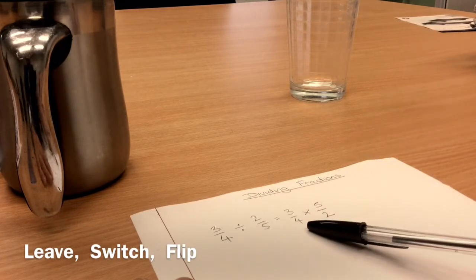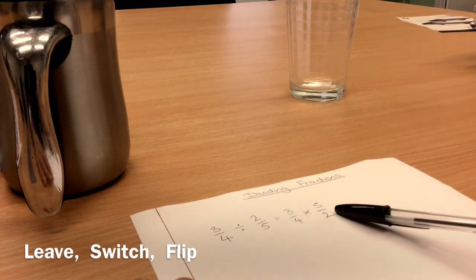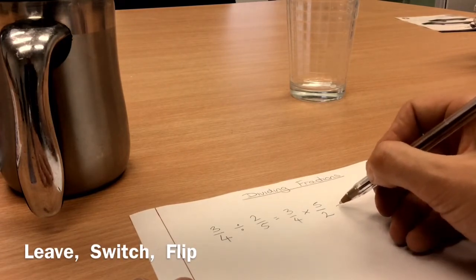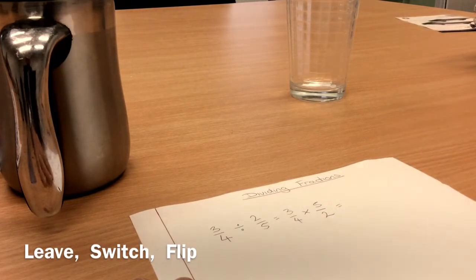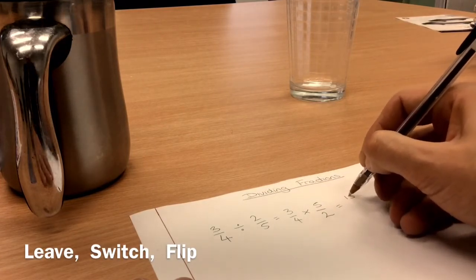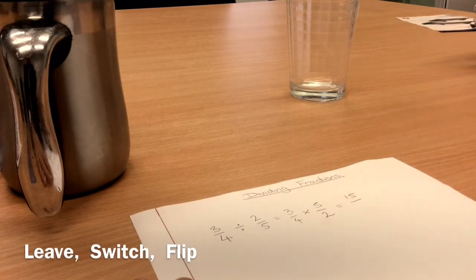So leave, switch, flip. Now what I've got is a multiplying sum. And we did multiplying in the lesson today. How do we multiply two fractions? We multiply the top, and we multiply the bottom.